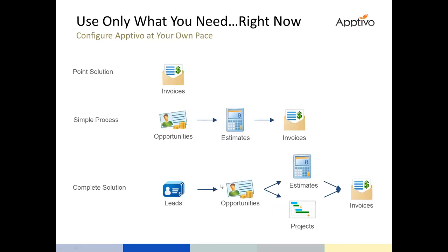Aptivo is configured with this in mind — we understand every business is looking for something different. Our app store is set up in an à la carte fashion where you get access to the whole system with no per-app fees. Every app is always available to turn on whenever appropriate. Whether you want a simple point solution doing invoicing only, or a full end-to-end solution on day one, Aptivo can grow with you without growing your costs.